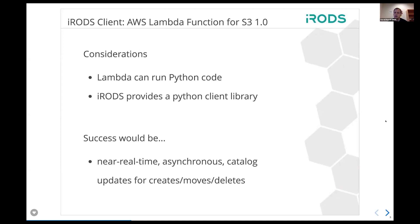In order to get there, we thought about how to write this, what language, where it should live. It became clear we'd like this client to be written in Python — it has all the functionality we need and we can run it in Amazon's Lambda service. There are other services like Lambda for other cloud deployments, so theoretically this will also be reproducible in other cloud infrastructures. Defining success: we would have near real-time asynchronous catalog updates for both creates, moves, and deletes — an improvement over the automated ingest tooling where we could not see deletes because those were not picked up by our scanning approach.